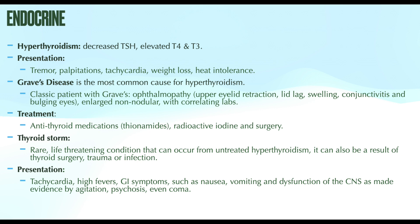There are two big problems with thyroid disease: hypothyroid (too low) and hyperthyroid (too high). Classic lab findings for hyperthyroidism are a decreased TSH with elevated T4 and T3 — the TSH doesn't have to work as hard because so much active thyroid hormone is already circulating. Patients with hyperthyroidism often present with tremor, palpitations, anxiety, increased heart rate, weight loss, and heat intolerance. A good memory tip: with hyper, everything becomes heightened.